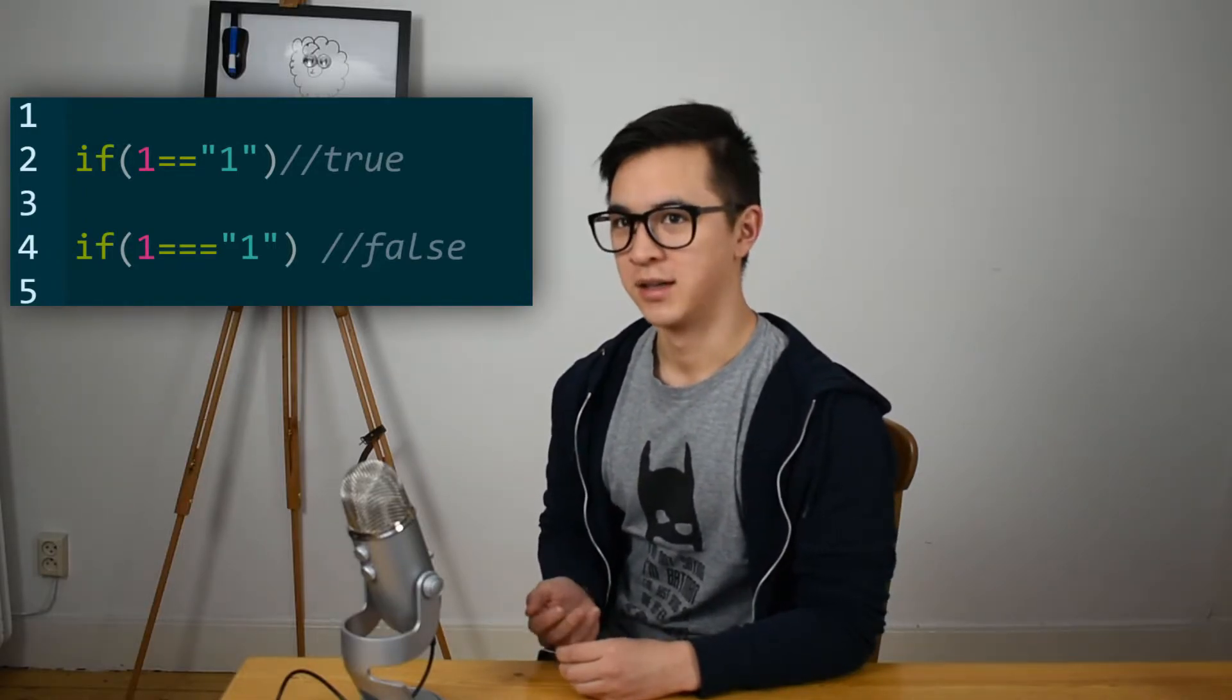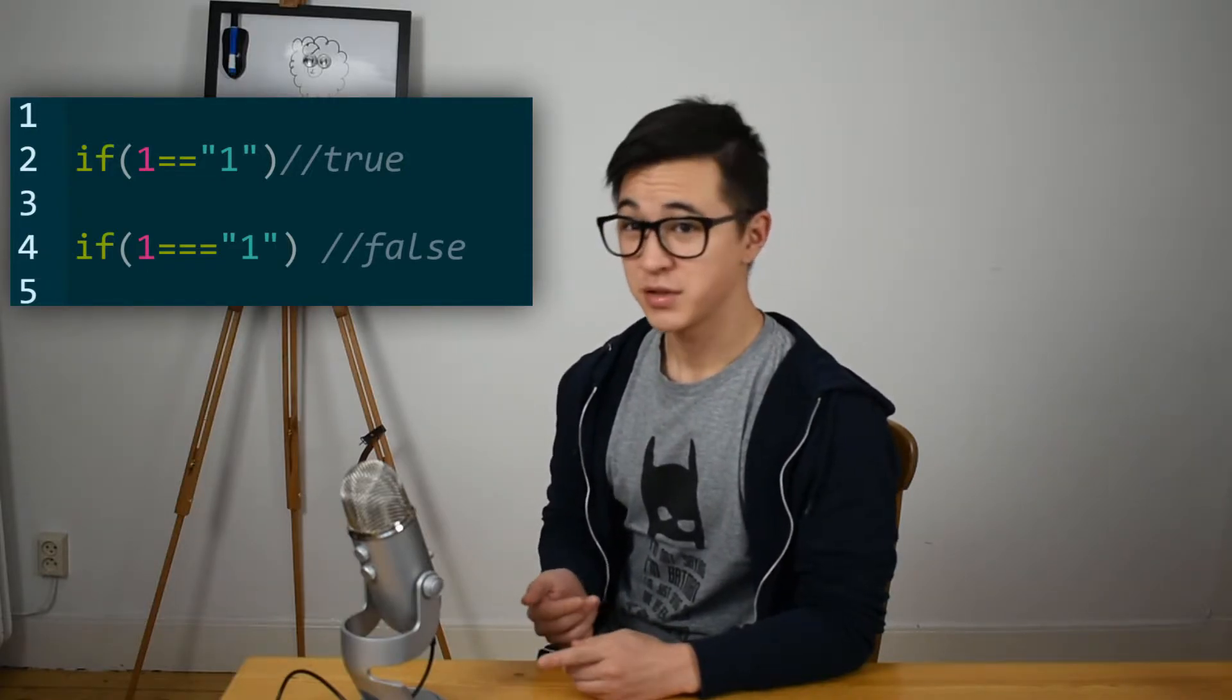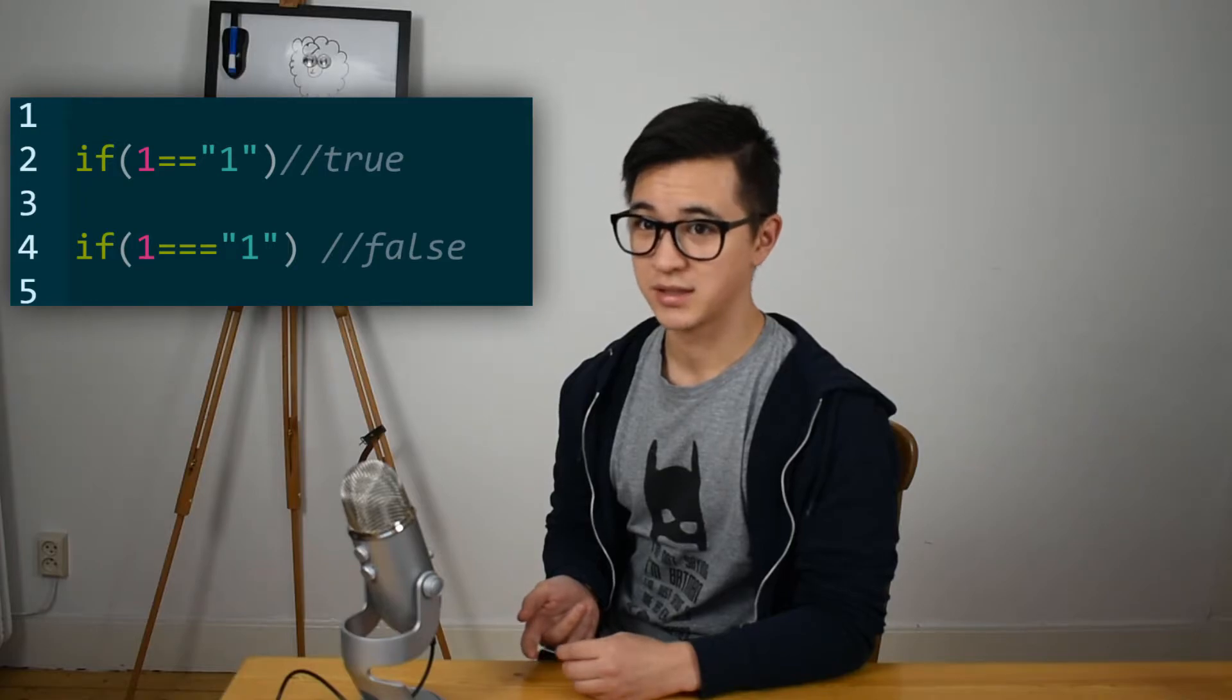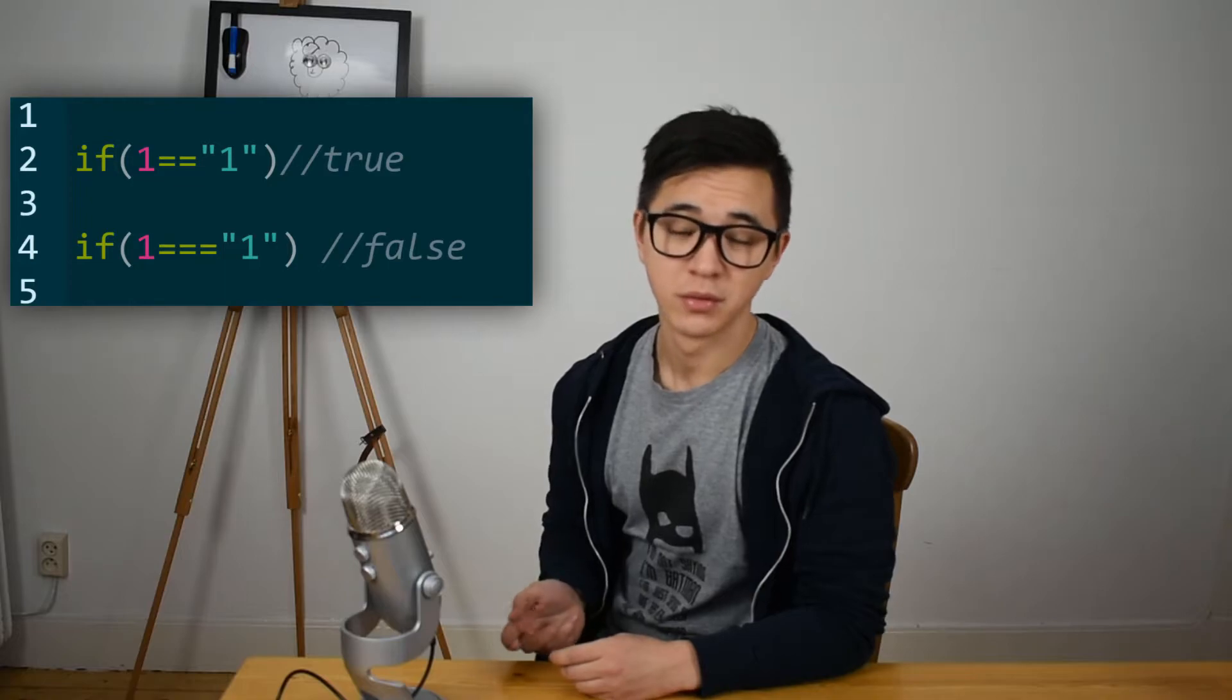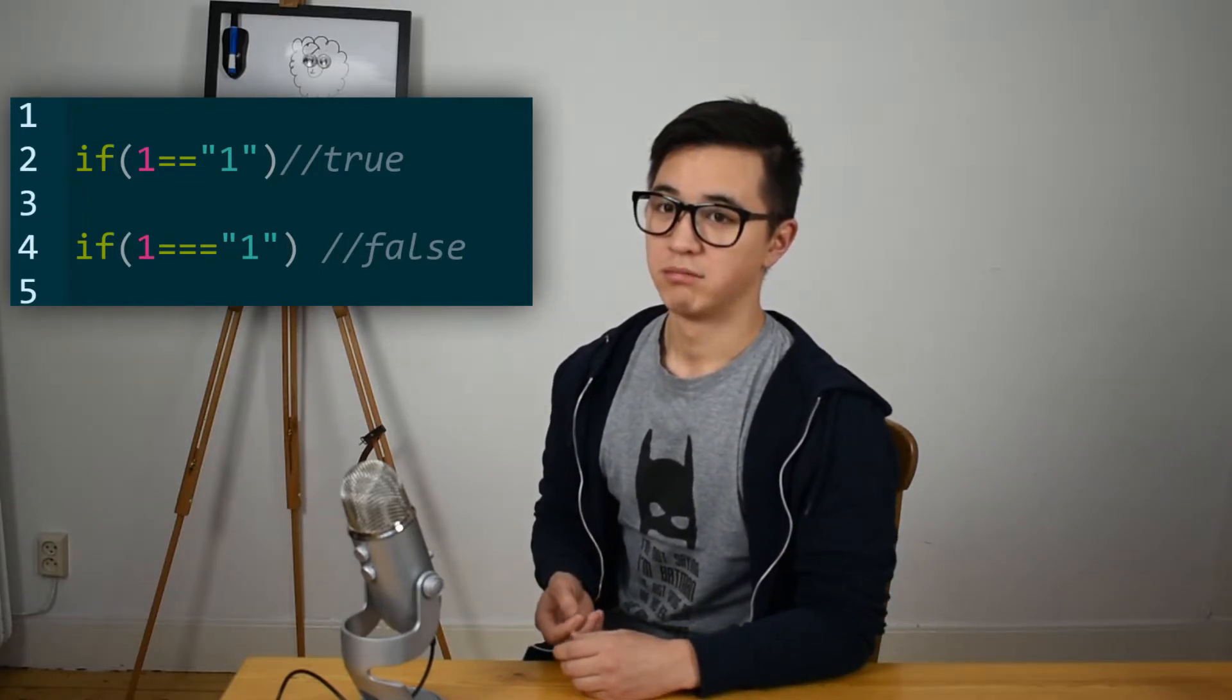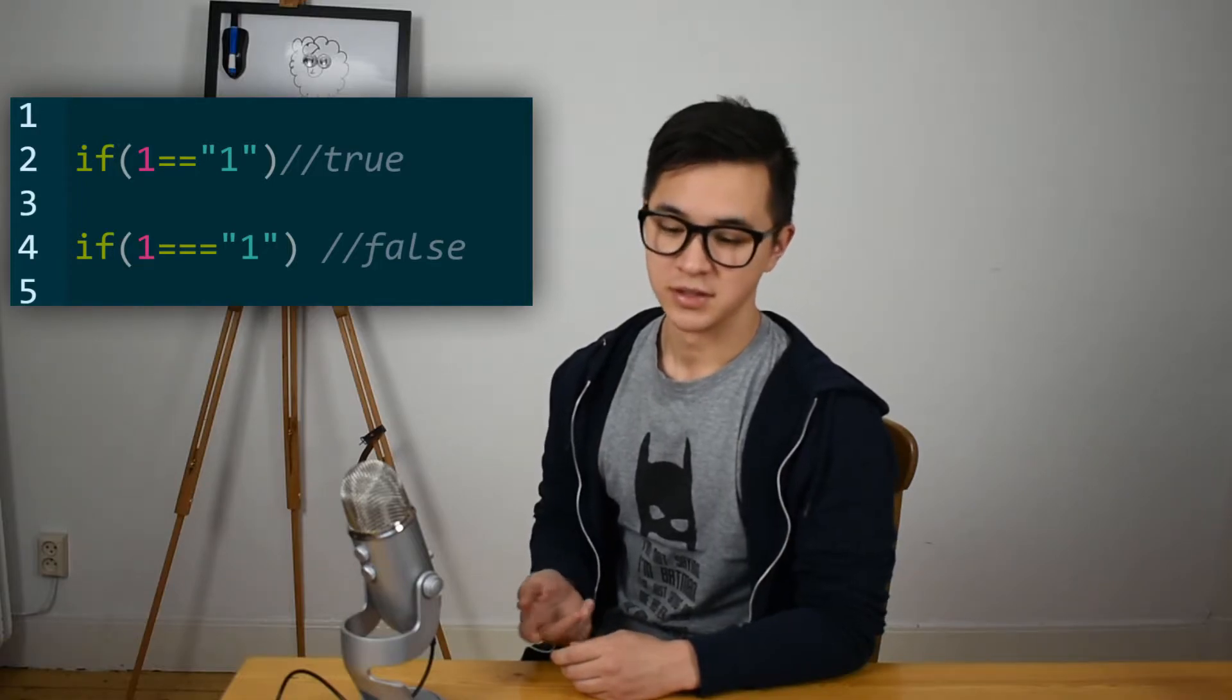So I learned the difference. If you use two equal operators, it will do type conversion before comparing the objects, which means that number one and string one will come out true. However, if you use three equal operators, it will come out false because it needs to be of the same type.